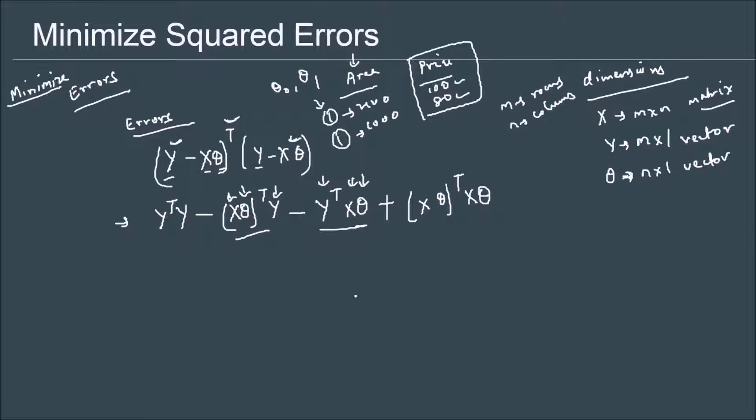Now if we multiply x and theta, what will we get? We are multiplying a matrix which is m by n, and theta will be n cross 1. Now if we multiply these two matrices, these have to be similar and the resultant matrix will be m cross 1. Now if I multiply the transpose of this, which is 1 cross m, with y...